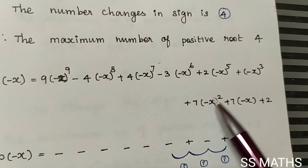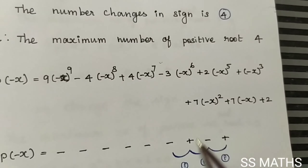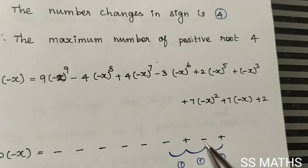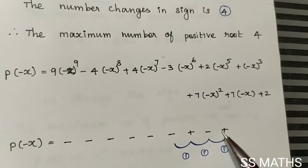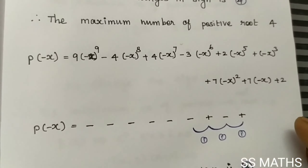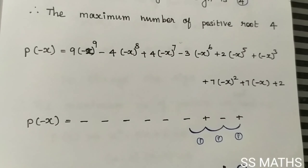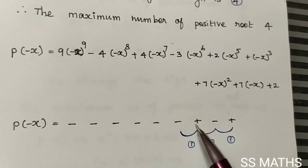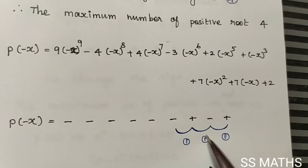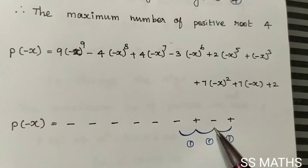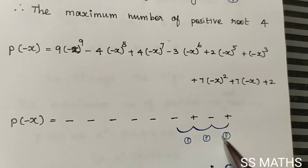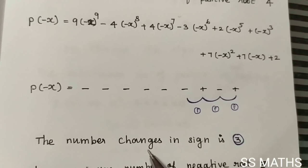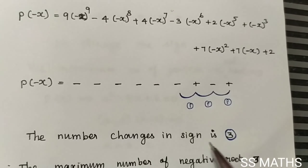After substituting and simplifying: the signs become negative, positive, negative, positive, negative, negative, positive, negative, plus. Checking the sign changes: the number of changes in sign is 3.